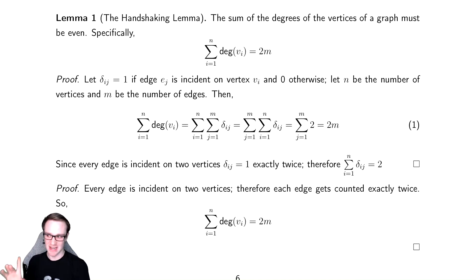The first proof up top is not necessarily enlightening, so we're not really going to read through the details of the proof, but I'll read the idea of the theorem. It says that the sum of the degrees of the vertices of a graph must be even. Why on earth is that true?